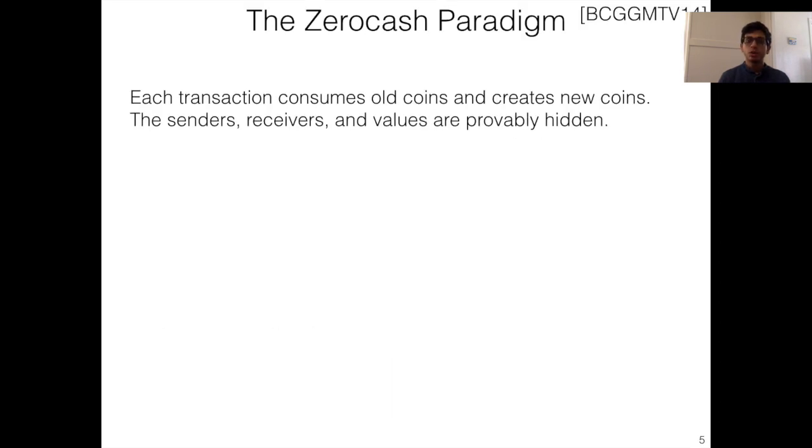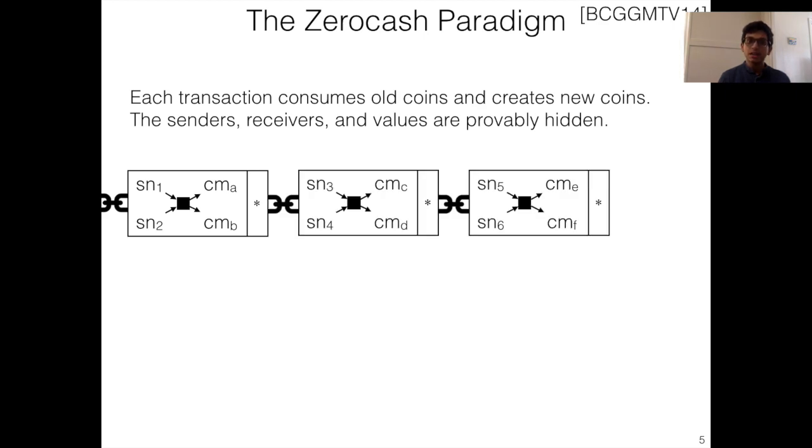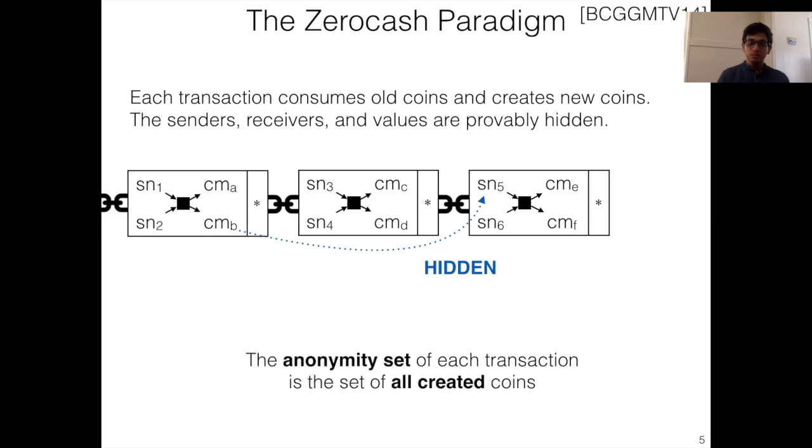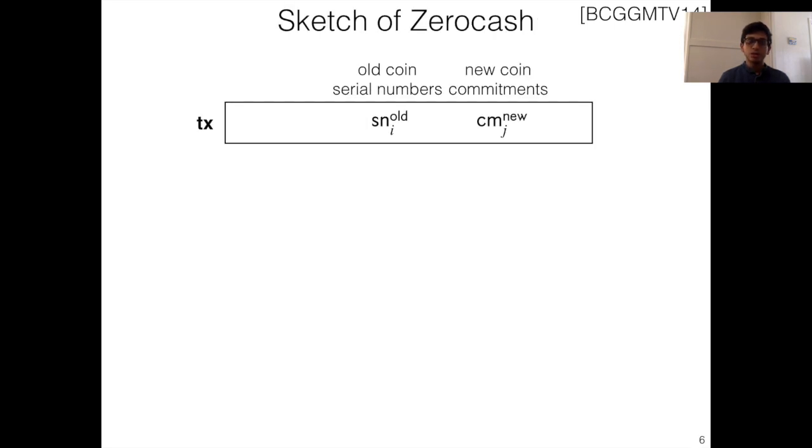Our starting point will be the Zerocash protocol because it serves as the basis for our construction, but also it demonstrates how to achieve strong privacy guarantees for a simpler case of private currency transactions. Okay, so in Zerocash, each transaction consumes some old coins and creates some new ones in a manner that completely hides the sender, receiver, and value of every coin in the transaction. In all detail, a Zerocash transaction consists of some serial numbers corresponding to the consumed coins and some commitments corresponding to the new coins. And the guarantee is that there is no way to link a transaction that creates a coin to the transaction that spends it, i.e., the anonymity set of each transaction is a set of all created coins. This is a very strong privacy guarantee.